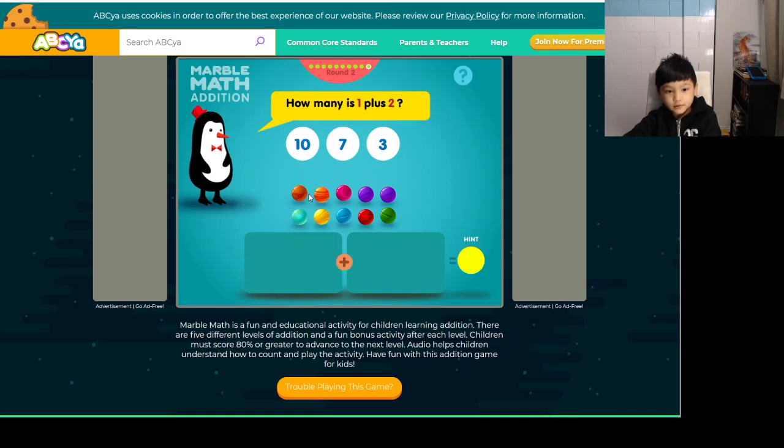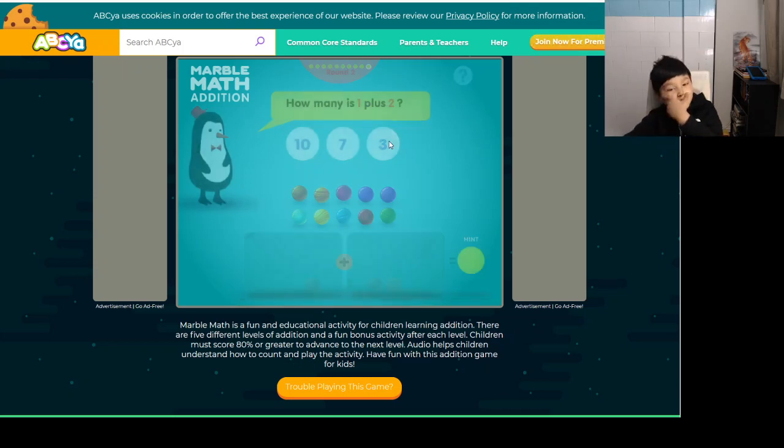It's 1 plus 2, right? So here's the one, 1, right? Let's see. 2, 3 marbles. 1 marble, 2 marble, and 3 marble. So the answer is 3.